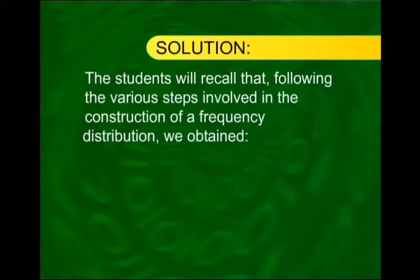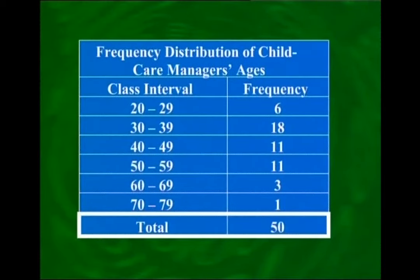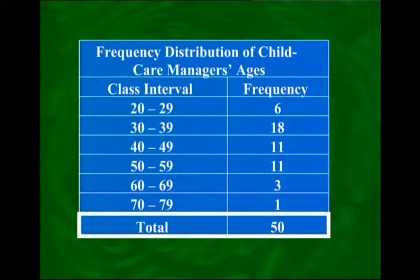Following the steps involved in the construction of a frequency distribution, we obtained classes: 20 to 29, 30 to 39, 40 to 49, and so on, with frequencies 6, 18, 11, 11, 3, and 1.